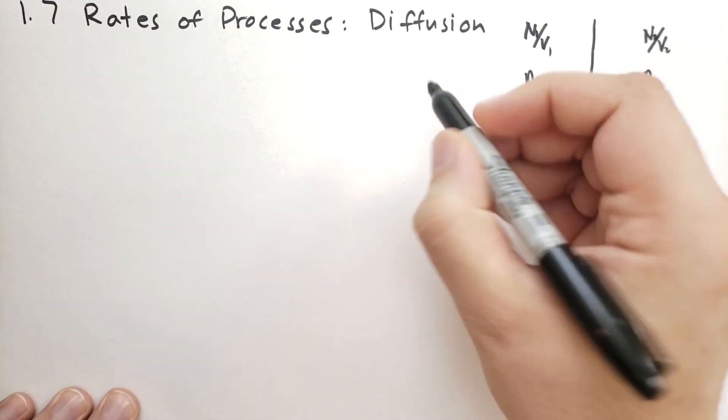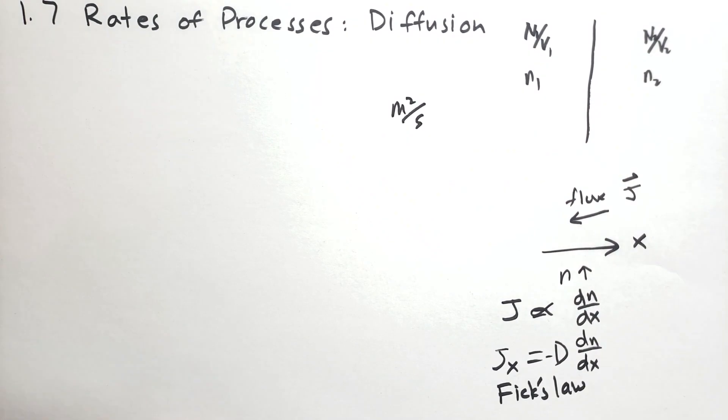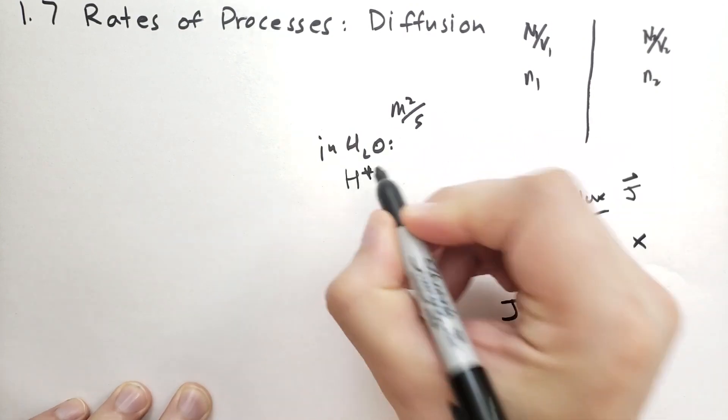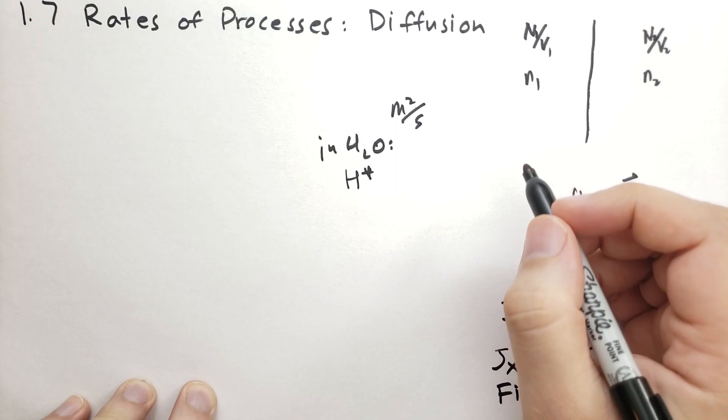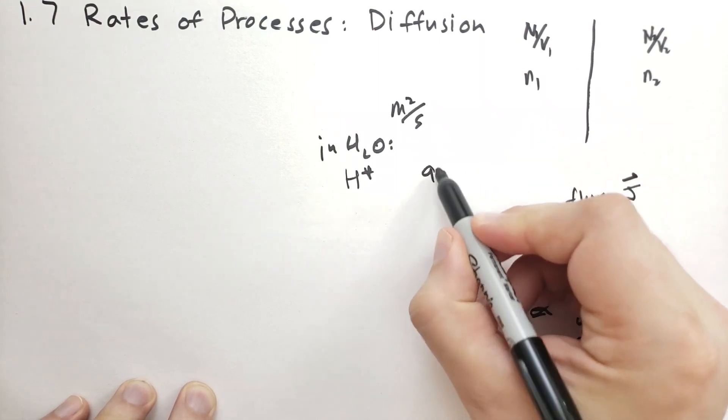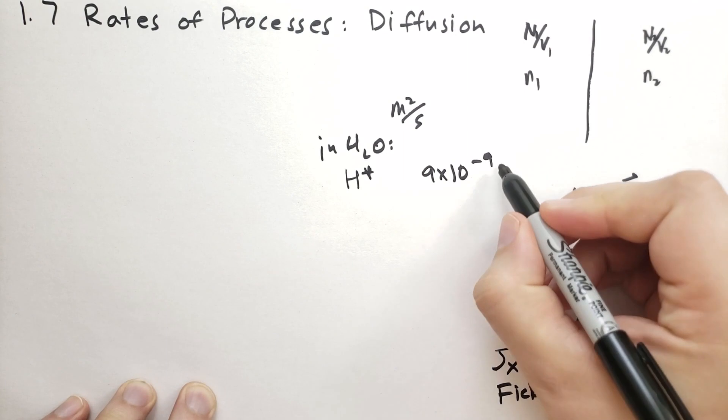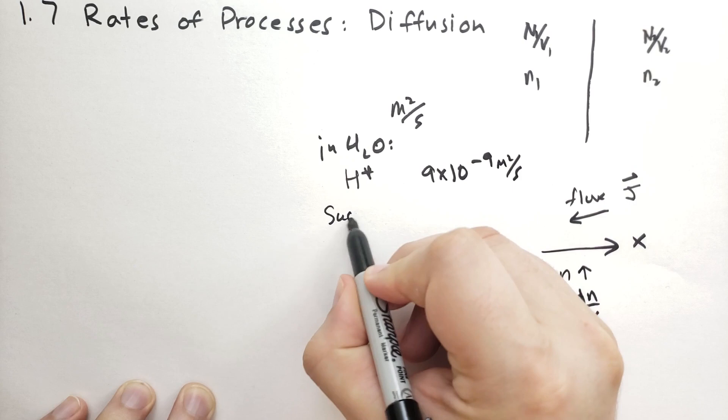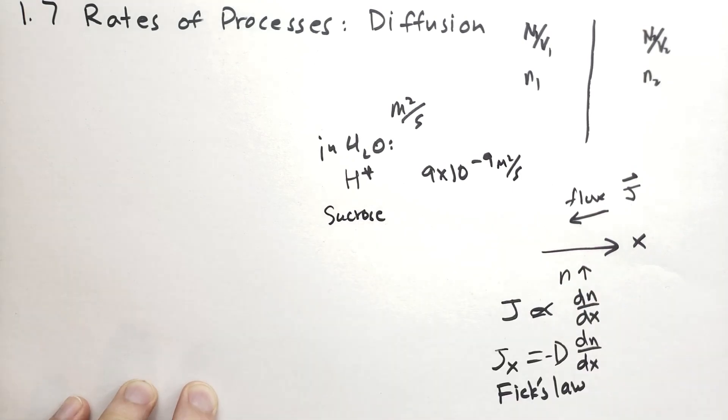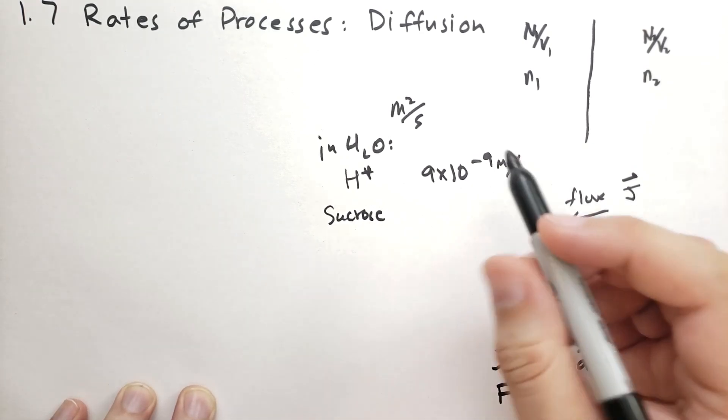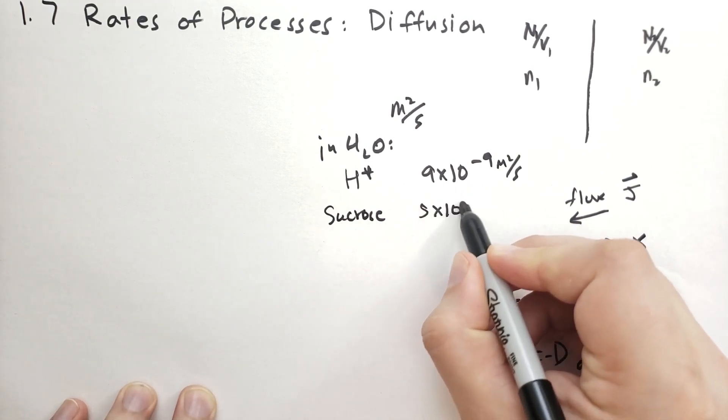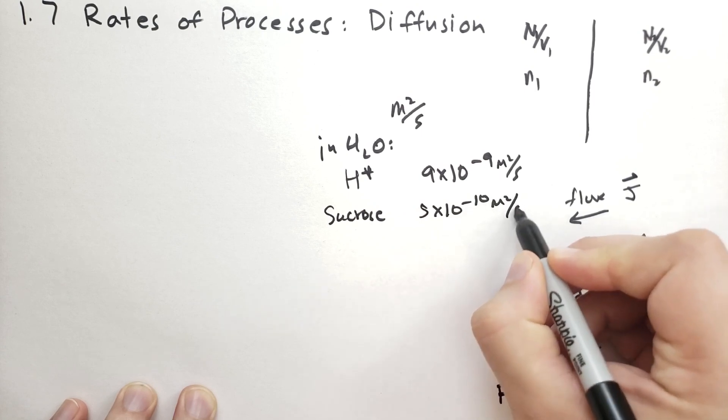D seems to depend on the type of molecule that is diffusing and on what it is diffusing through. It has a unit of meters squared per second. And in water, these are protons, diffusing protons, H plus ions, is 9 times 10 to the minus 9 meters squared per second. And something like a sucrose, I forget the exact formula for it, but it has a lot of carbon and hydrogen in it. That can be as slow as 5 times 10 to the minus 10.